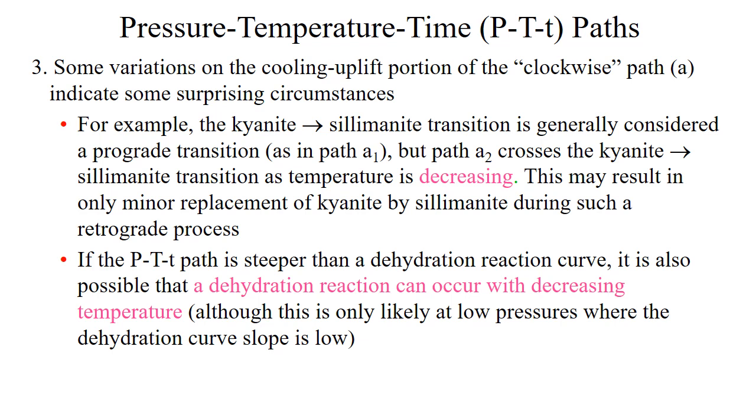This may result in only minor replacement of kyanite by sillimanite during the process of retrograde processes. We will discuss this more when we talk about metamorphic reactions. If the P-T-t path is steeper than the dehydration reaction curve, it is also possible that dehydration reactions can occur with decreasing temperature. Although this is only likely at low pressures, where dehydration curve slope is low.